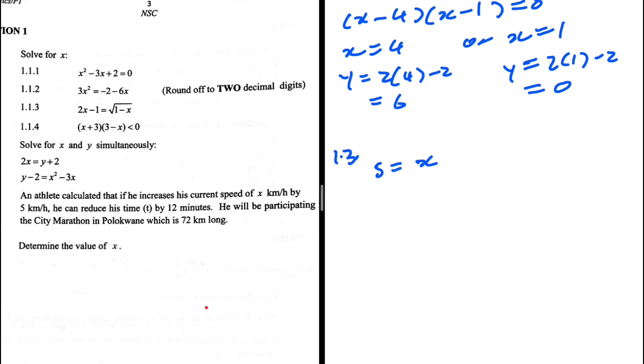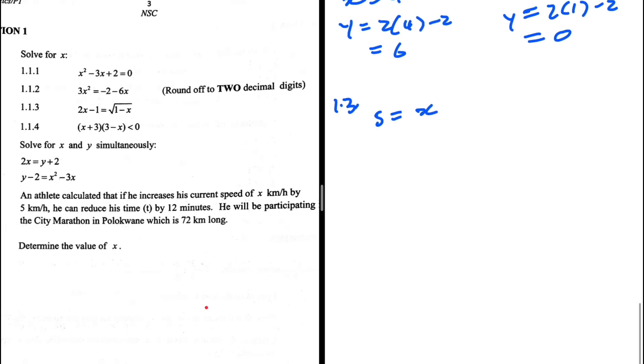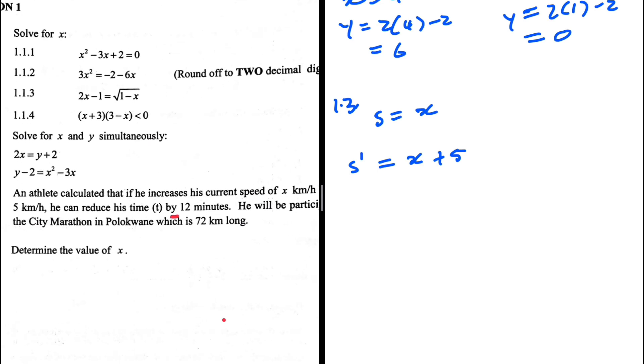So the speed initially is x. And then when we increase the speed, let's say speed with that note there on top, we increase it to x plus five kilometers per hour. And then the time, we reduce the time by 12 minutes when we increase it to x plus five.